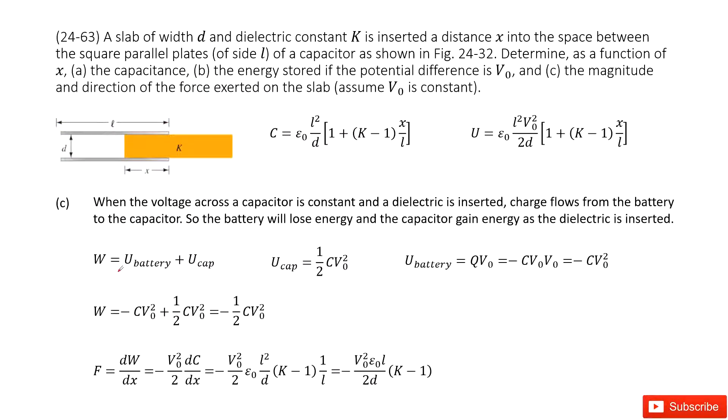We can see the external work needed just equals the energy of the battery and the energy of the capacitor. This is the work-energy principle. So when the voltage across the capacitor is constant and the dielectric is inserted, charge flows from the battery to the capacitor. So it looks like the external work required is just the energy done by the battery and the energy change of the capacitor.